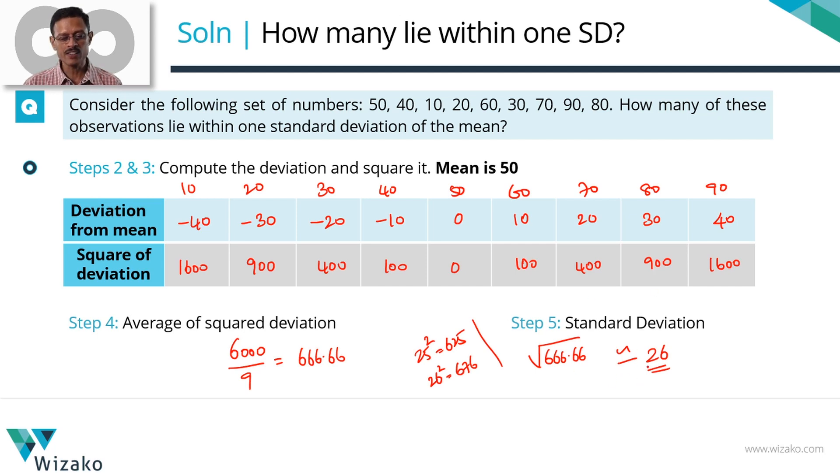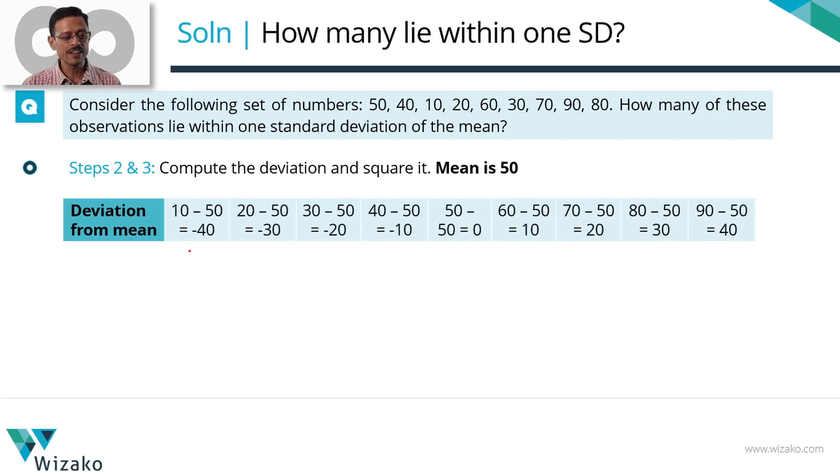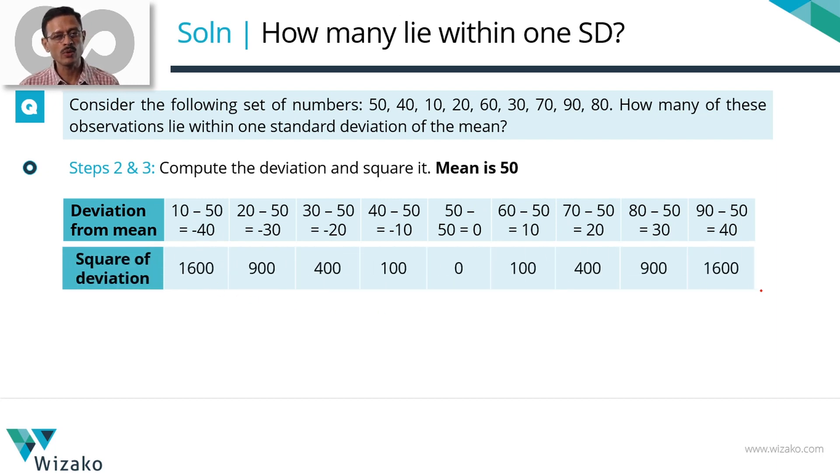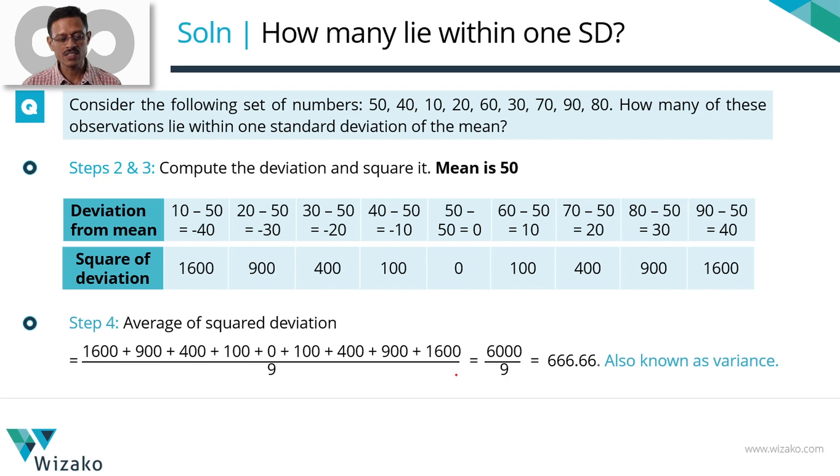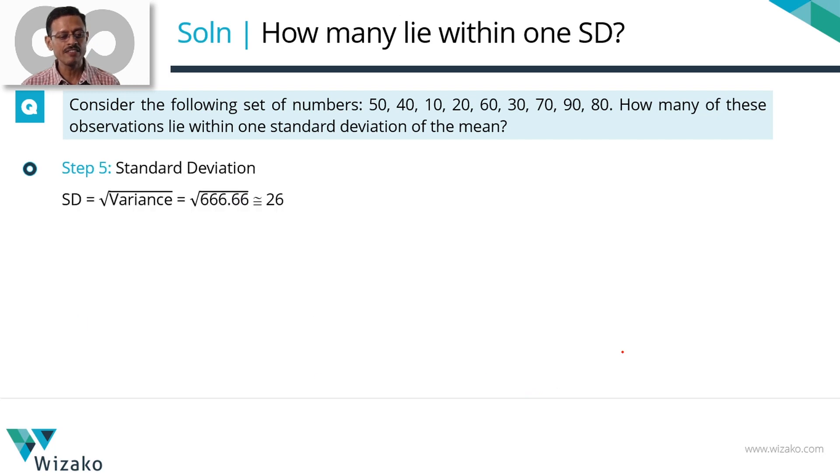Let's quickly summarize computing the standard deviation in a printed form. Compute the deviations as minus 40 all the way up to plus 40. These are the measures of the square of the deviation. This is the variance which is adding up all the square deviations, dividing it by 9, which works out to 666.66. Standard deviation is the square root of this number, which approximately works out to 26.